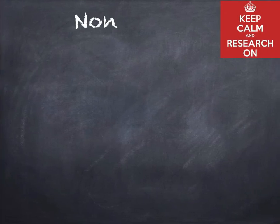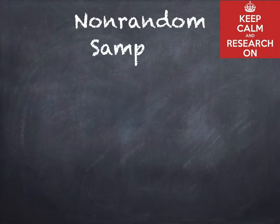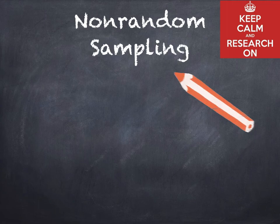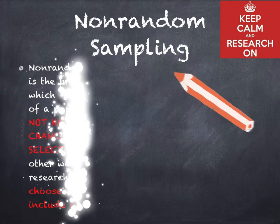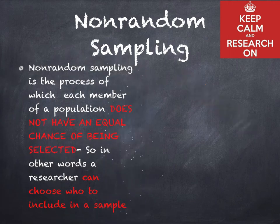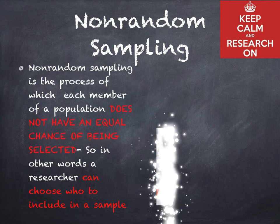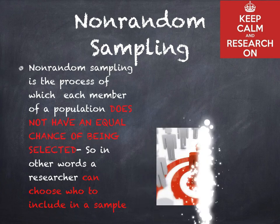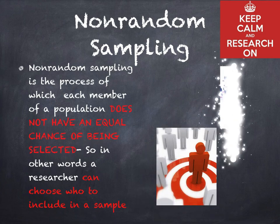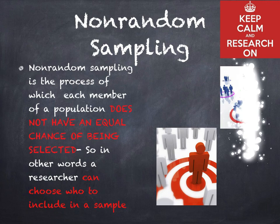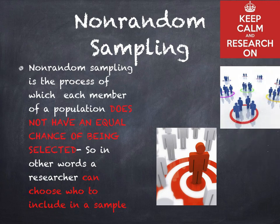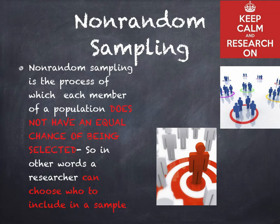Non-random sampling refers to a process in which each member of a population does not have an equal chance of being selected. In other words, a researcher can choose who to include in a sample.